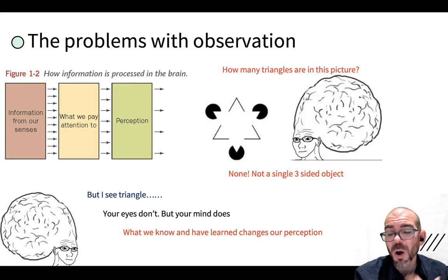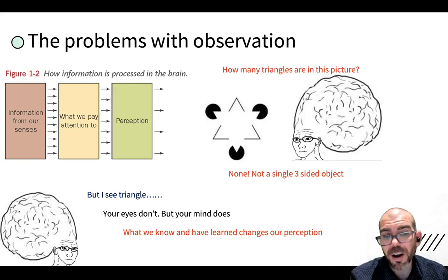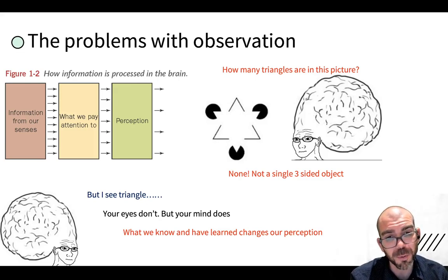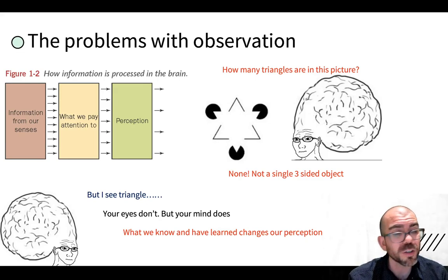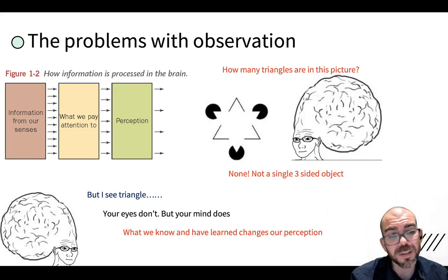Because of what we know and what we've learned, and how that changes our perception, we can't stake much of a claim in our perceptions giving us true representations of reality. This is the problem with education — you can't unlearn something. As you go through all of your classes you'll learn more things, and what you learn changes how you see the world. From a scientific standpoint, if you walk through the forest as a botanist who's very knowledgeable on plants, you're going to see specific species. But if you have no knowledge of plants at all, you're just going to see a bunch of trees. What you know changes what you see, and what you see changes what you know.